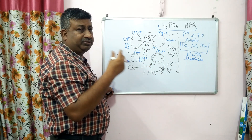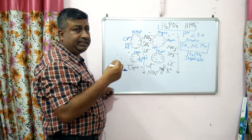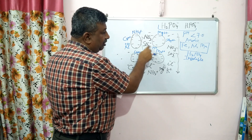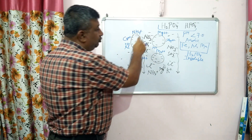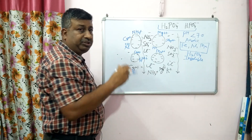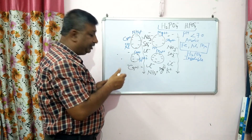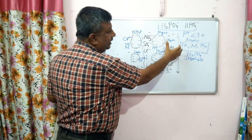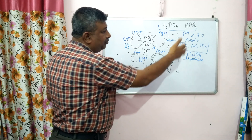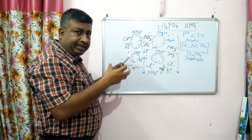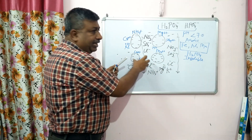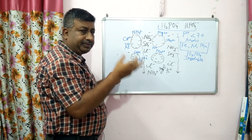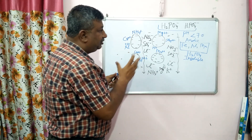Oxides are also present in acidic soil. If aluminium oxides or iron oxides are there, the phosphate ion attaches to these oxides as well. That is why phosphate is not in soil solution. For leaching to occur, the ion must be free in solution — this is the fundamental problem.